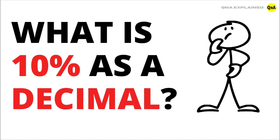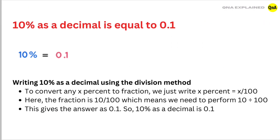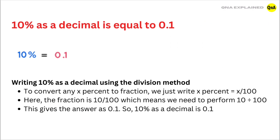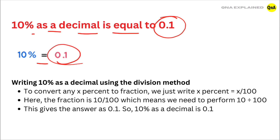What is 10% as a decimal? 10% as a decimal is equal to 0.1. Writing 10% as a decimal using the division method.